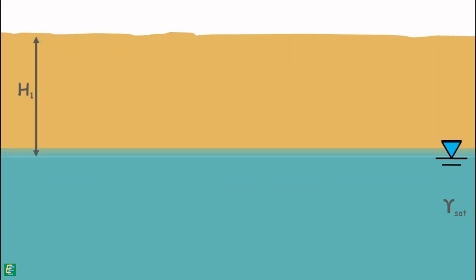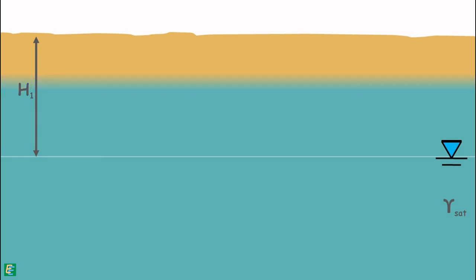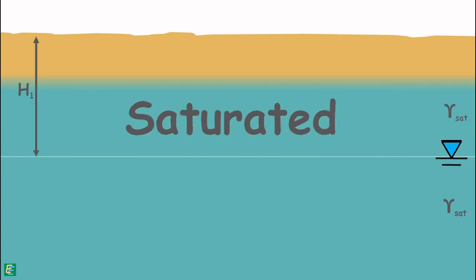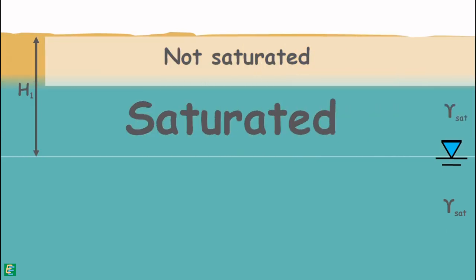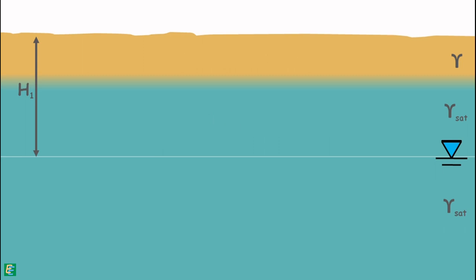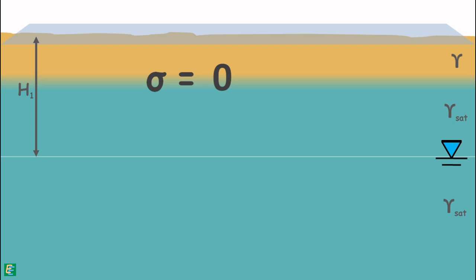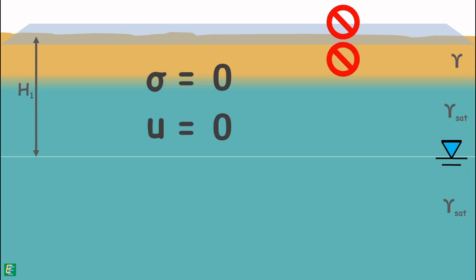Now let's take another case: when capillary rise saturates the soil only up to some height above the water table, and soil saturation does not reach up to the surface. The saturated part of the soil has unit weight gamma_sat, and the unsaturated, perhaps wet, soil has bulk unit weight gamma. At the soil surface, total stress is zero, pore water pressure is also zero as no capillary water rose to the surface, and so effective stress at the surface is also zero.